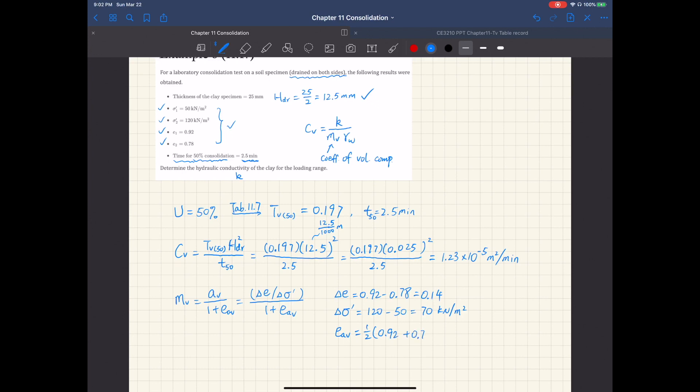0.78 and 0.85. So if plugging all these numbers into the expression for mv, you get mv of 0.00108 meter squared per kilonewton.